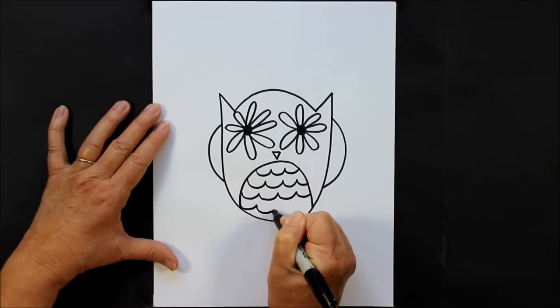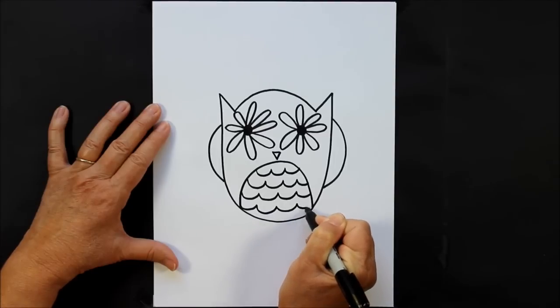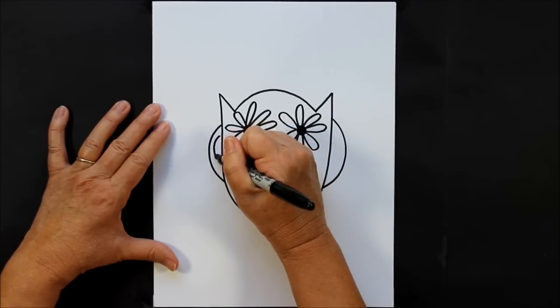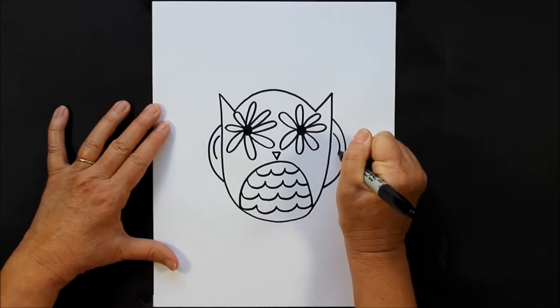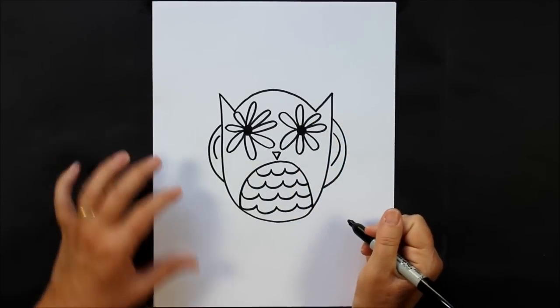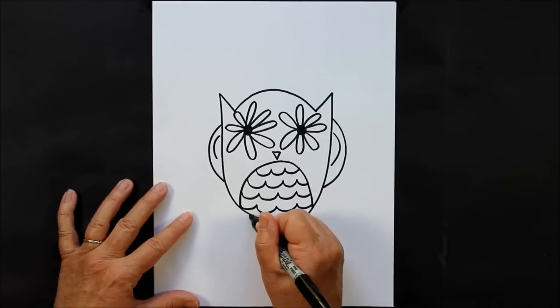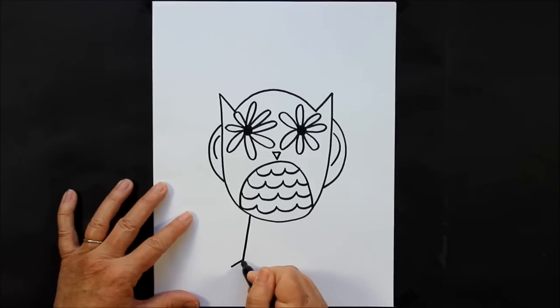Just like that. If you'd like to put another line inside your wing, that's a good idea as well. Now let's go down to the bottom. The legs are just going to be straight lines with some toes coming out, just like that.